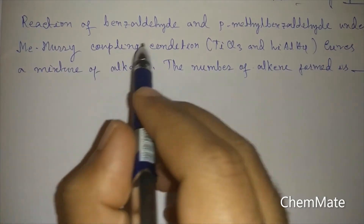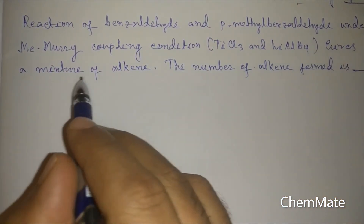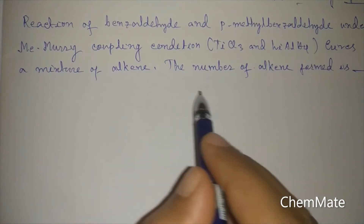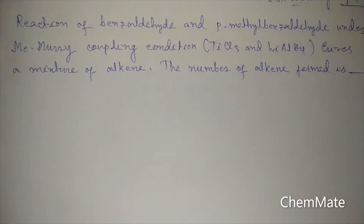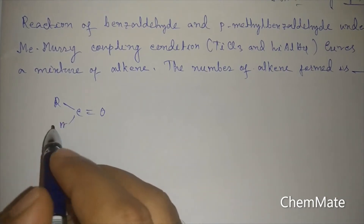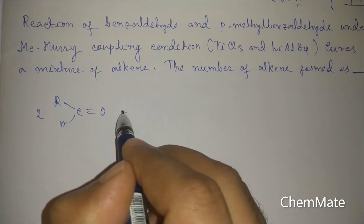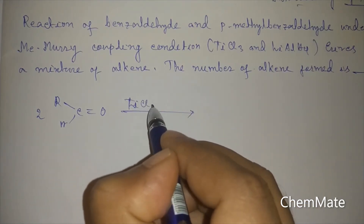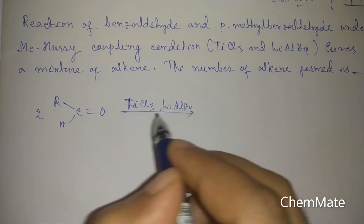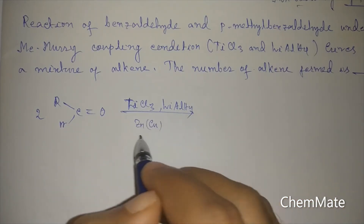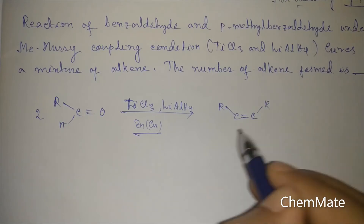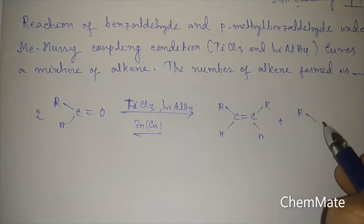The next question: the reaction of benzaldehyde and para-methyl benzaldehyde under McMurry coupling conditions — that is TiCl3 and lithium aluminum hydride — gives a mixture of alkenes. How many alkenes are formed? In a McMurry coupling reaction, two moles of aldehyde or ketone react in the presence of TiCl3 and LiAlH4 (or zinc-copper couple as reducing agent) to give an alkene as a mixture of cis and trans isomers.